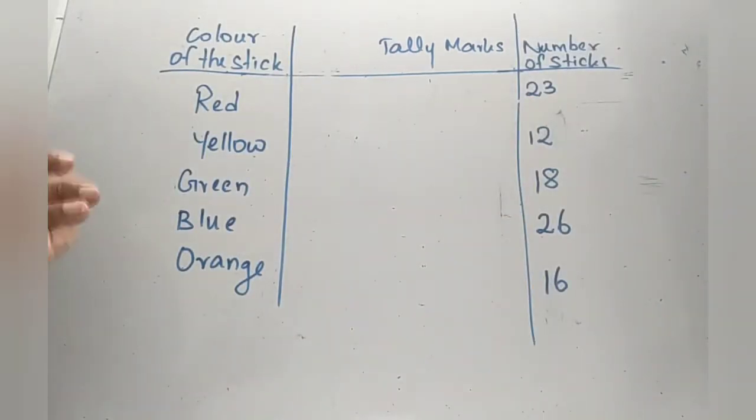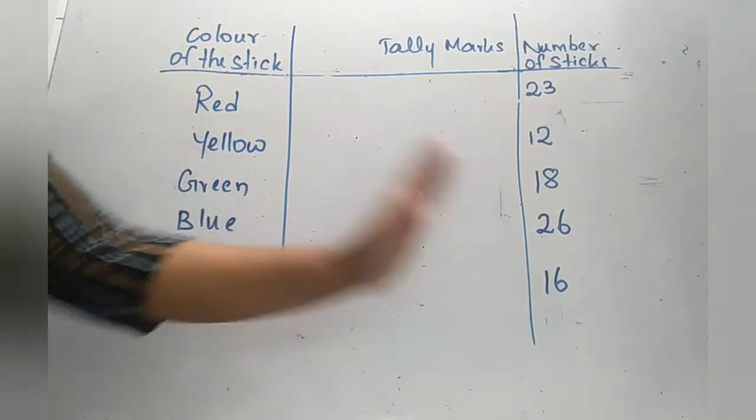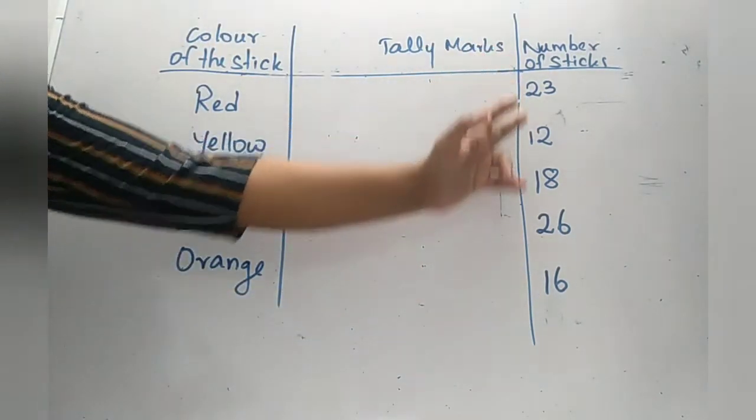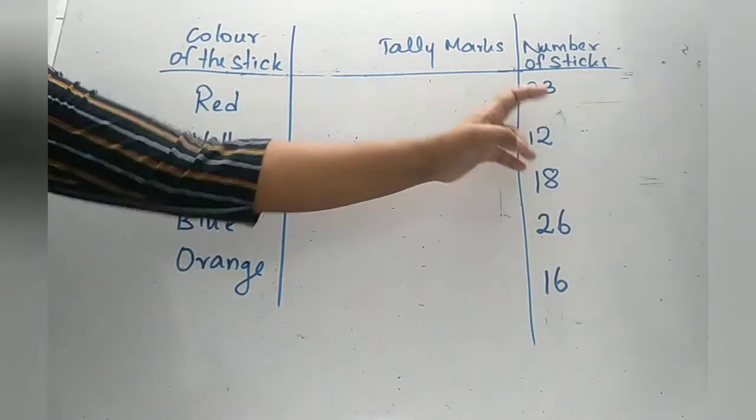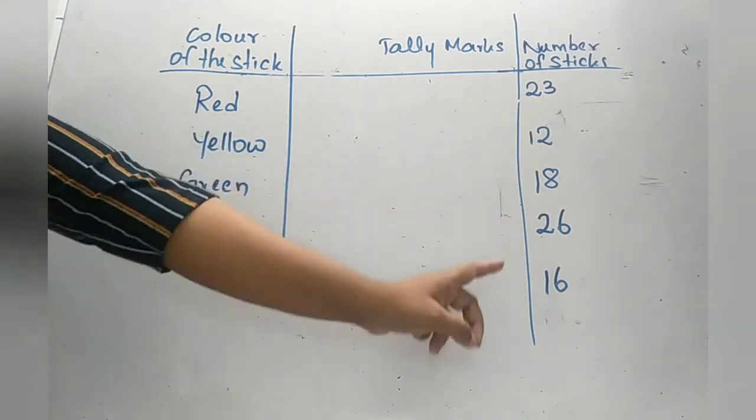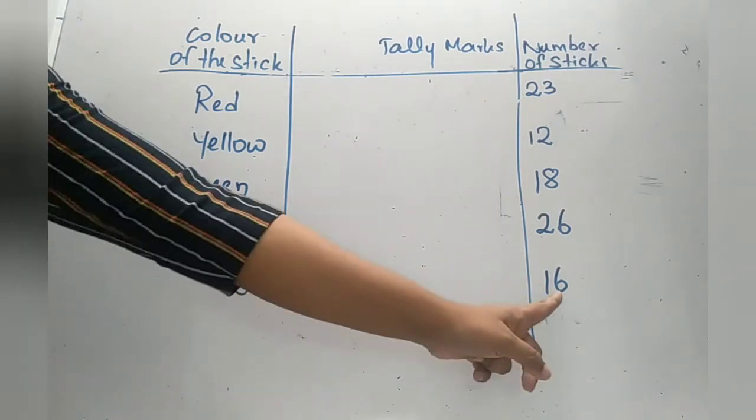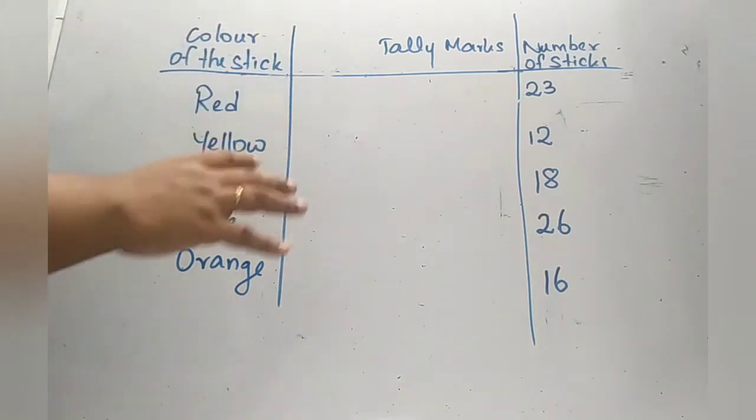Now due to the limited time, I have counted all the sticks. This column represents the number of sticks in each color. We have 23 red ones, 12 yellow color sticks, 18 green color sticks, 26 blue ones and at last 16 orange colored sticks. Now let's look at the way to represent this data.